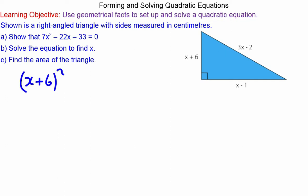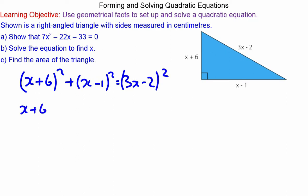So we have (x+6)² + (x-1)² = (3x-2)², which is Pythagoras's theorem. Now we can expand (x+6)², expand (x-1)², and expand (3x-2)².